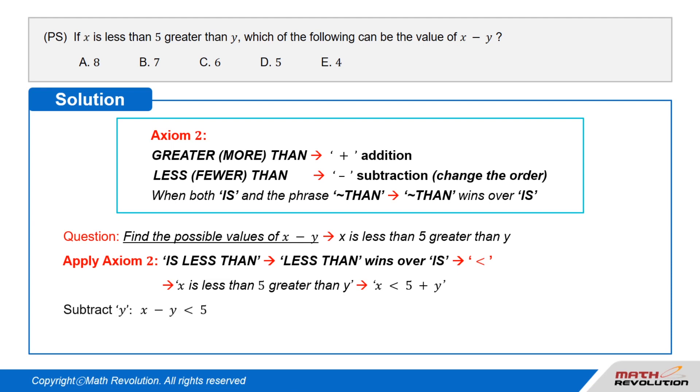Now, we will subtract y from both sides of the inequality to get x minus y is less than 5.